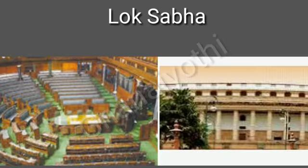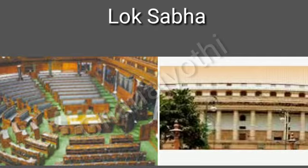Now let us view about Lok Sabha. The members of the Lok Sabha are elected directly by the people, so it is known as the House of People. The maximum number of seats is 545; 543 members are directly elected by the people, whereas 2 Anglo-Indians are nominated by the president. 79 seats are reserved for Scheduled Castes and 41 seats are reserved for Scheduled Tribes. The Lok Sabha members are elected for a term of 5 years.